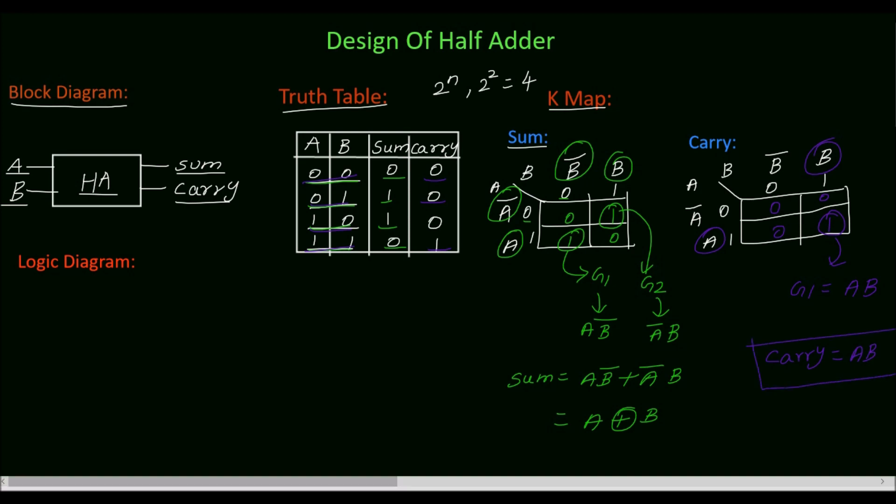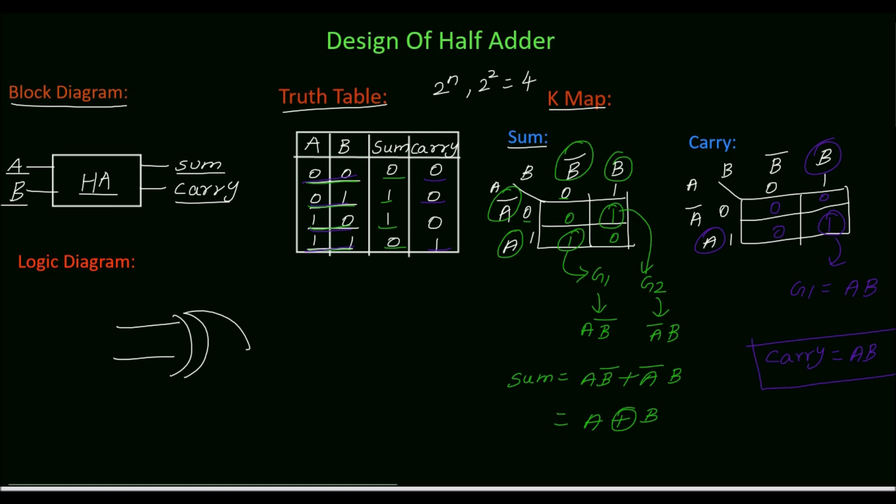Next we will draw the logic diagram for half adder. For sum we need XOR gate with the two inputs. The inputs are A and B. Output is sum.